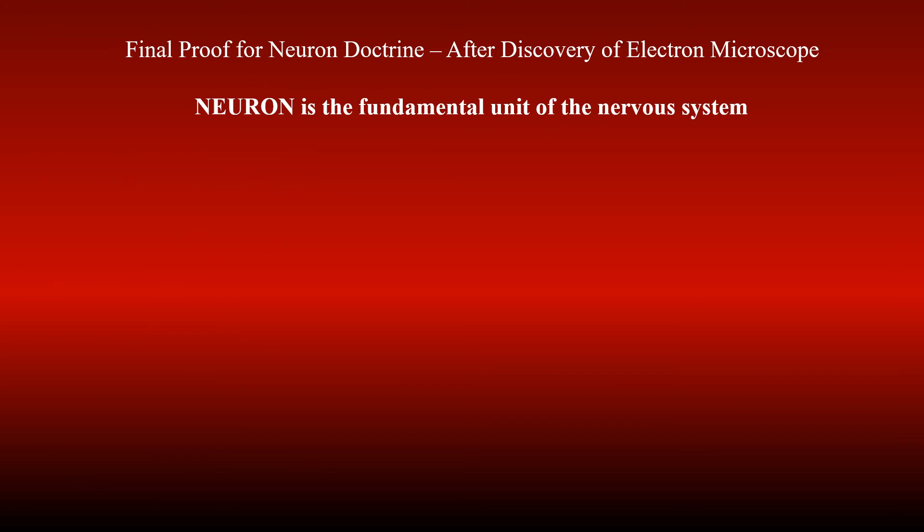The scientific community continued to produce research works that supported the neuron doctrine for the next 50 years. The final proof was provided after the discovery of the electron microscope, and as a conclusion it is now accepted that an individual neuron is the fundamental unit of the nervous system.